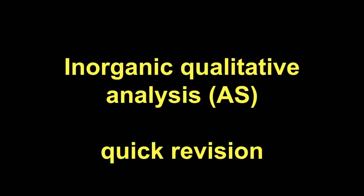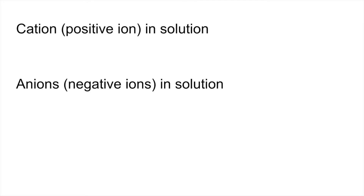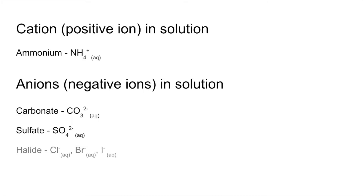A quick revision video for the inorganic qualitative analysis topic for AS chemistry. In the video I'm going to look at the test for one cation — the ammonium ion — and the anions carbonate, sulfate, and the halide ions chloride, bromide, and iodide. I'm going to run through the test, the expected observation, and the ionic equation, and then at the end of the video I'm going to look at the correct order that the tests should be carried out in.